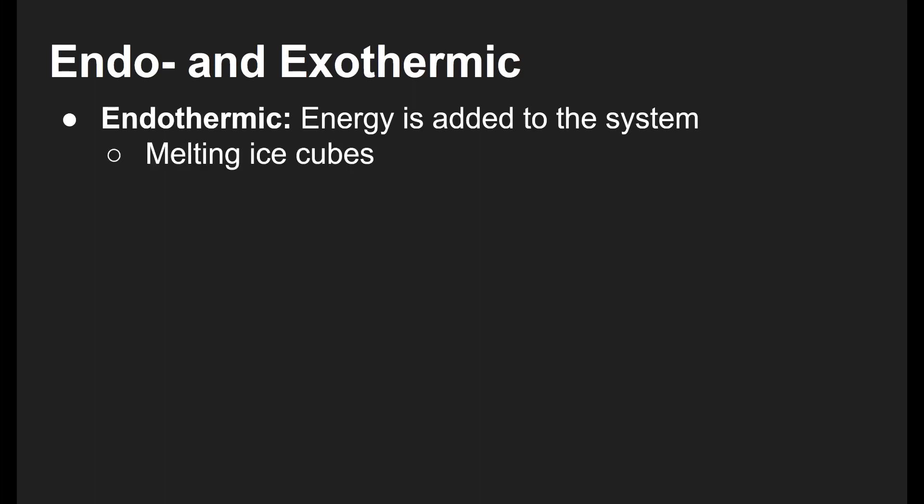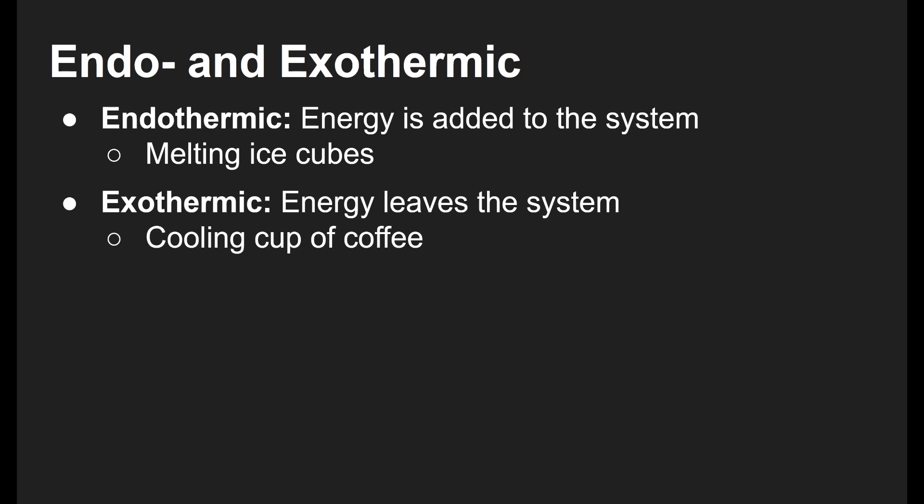And that actually brings us to our last vocab for this lovely video. And that's endo and exothermic. So an endothermic, in this case not reaction, but an endothermic process is when energy is added to the system. So what we just saw with the melting ice cubes is endothermic. So the system is gaining energy, but the surroundings are losing energy. So in general, since you are usually a member of the surroundings, you're going to feel this as cold because you're losing energy to the system. An exothermic process is when energy leaves the system. So our first example, the cooling cup of coffee is exothermic because energy was transferred to the surroundings. And because you are usually part of the surroundings, you're going to feel an exothermic reaction as warm.